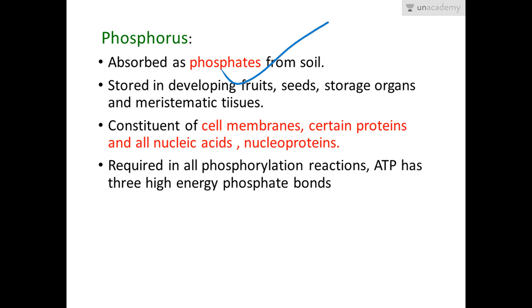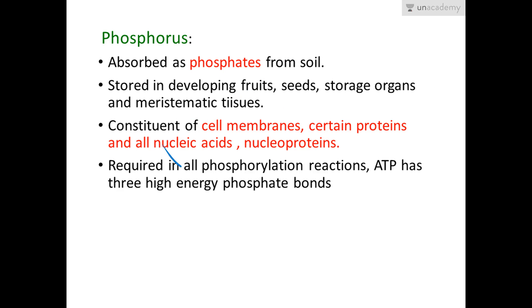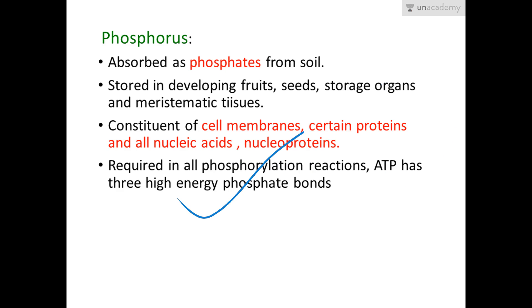Phosphorus is absorbed as phosphates from the soil and is stored in developing fruits, seeds, storage organs, and meristematic tissues. It is a constituent of cell membranes, certain proteins, all nucleic acids, nuclear proteins, nucleotides, nucleosides, DNA, RNA, ATP, and NADP. It is required in phosphorylation reactions — ATP has three high-energy phosphate bonds and is needed wherever phosphorylation occurs.